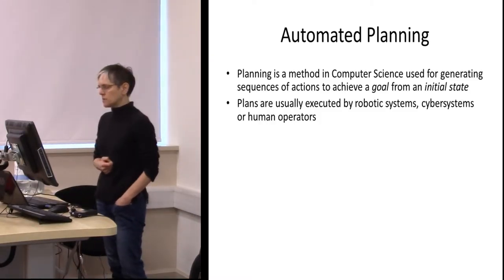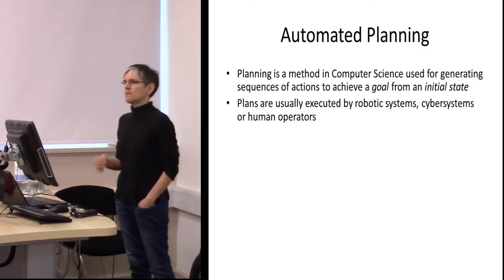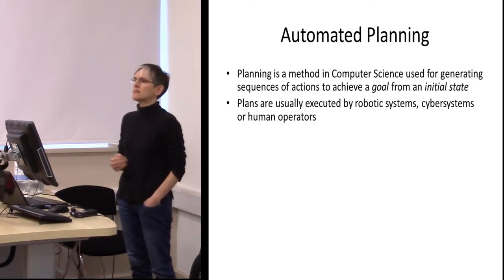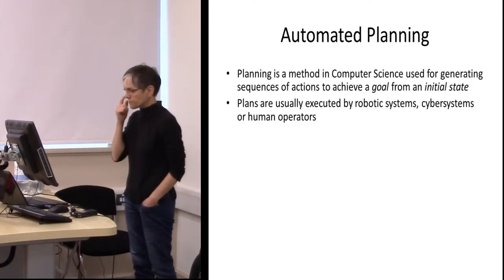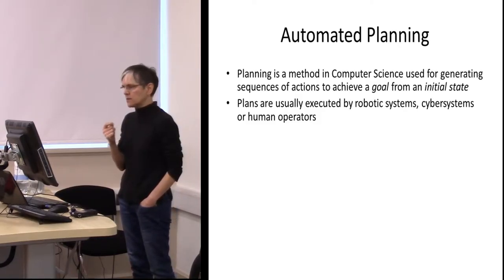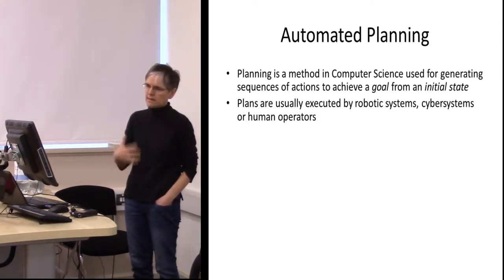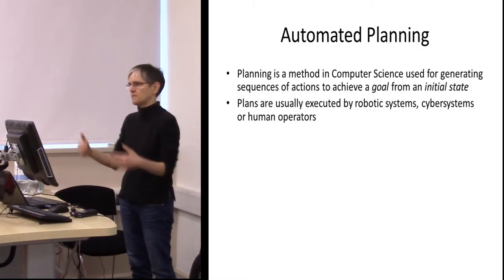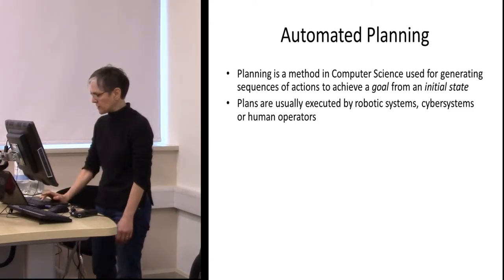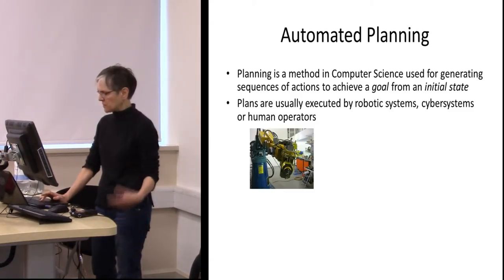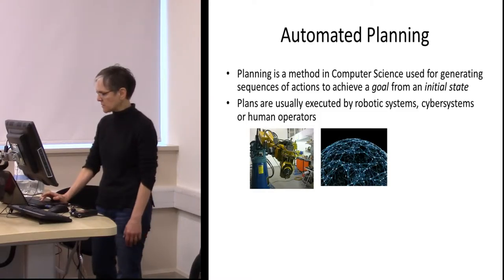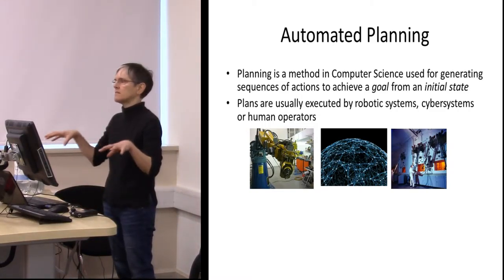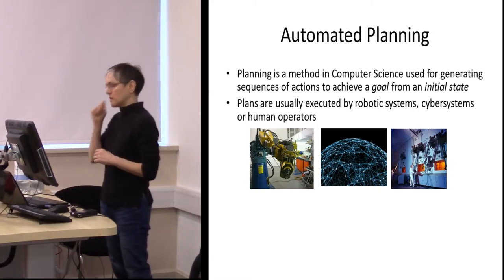Automated planning is a method in computer science for generating sequences of actions that will transform some initial state into a state satisfying some goal that needs to be achieved. In my work, we are usually looking at taking an initial state — the state now — and constructing sequences of actions that can be executed by robotic devices to achieve some goal in the future.